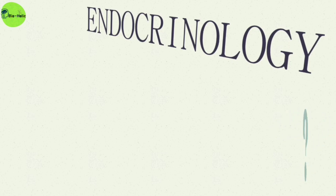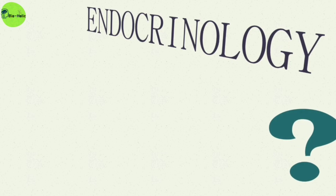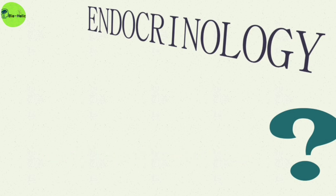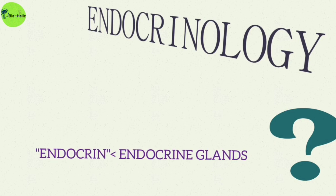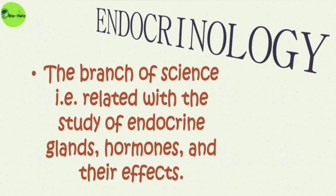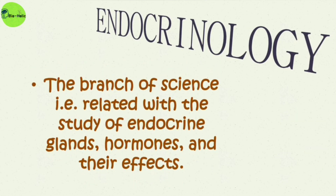So what is endocrinology? The suffix '-logy' is derived from 'logos,' meaning to study, and the 'endocrino' part comes from endocrine glands — meaning endocrinology is the study of endocrine glands. As a definition, endocrinology is the branch of science related to the study of endocrine glands, hormones, and their effects.